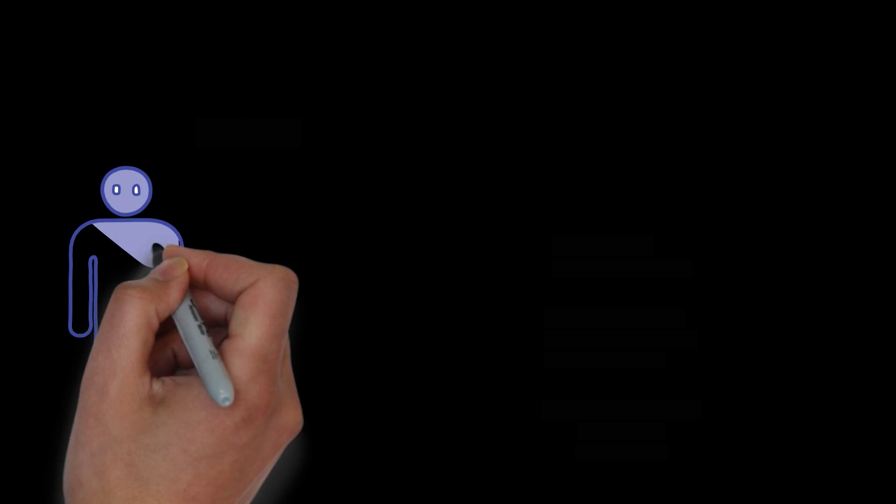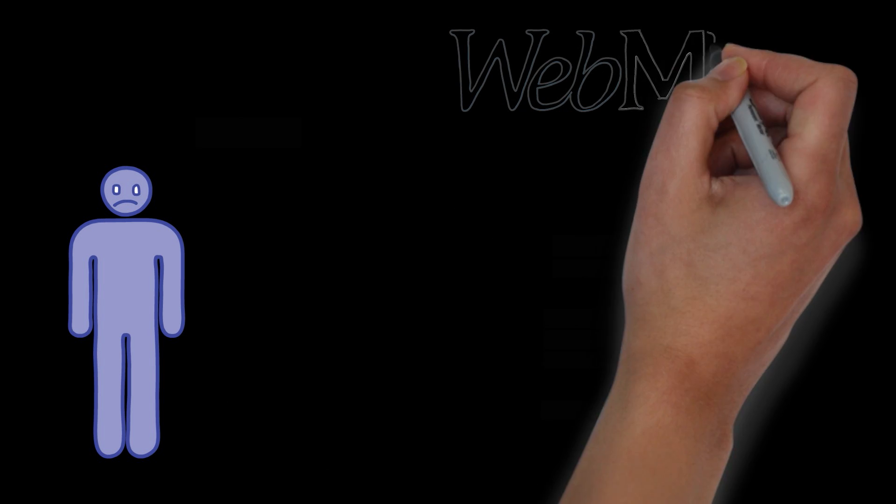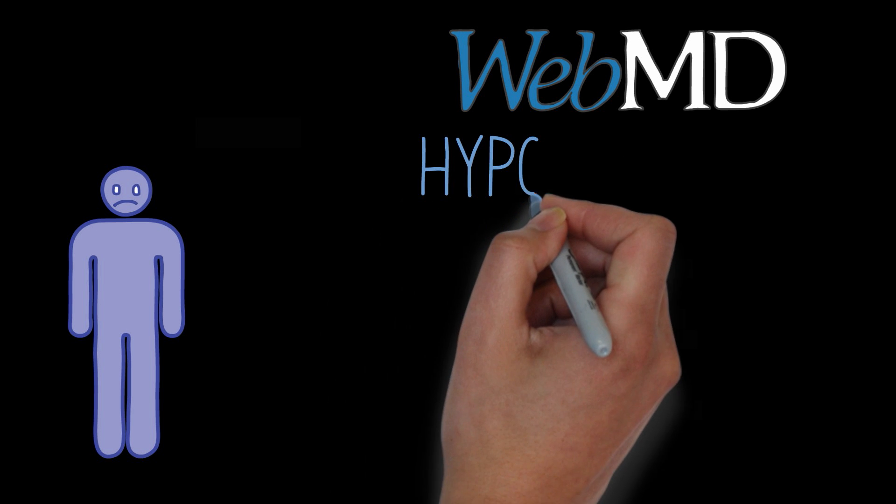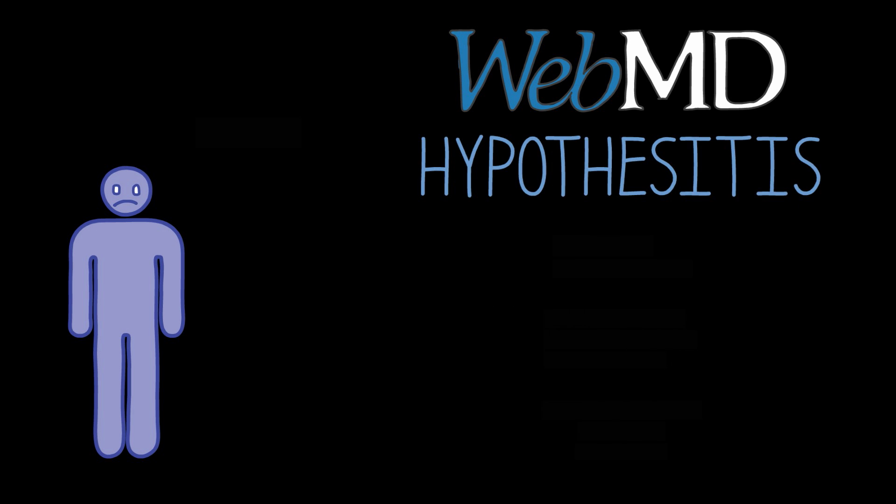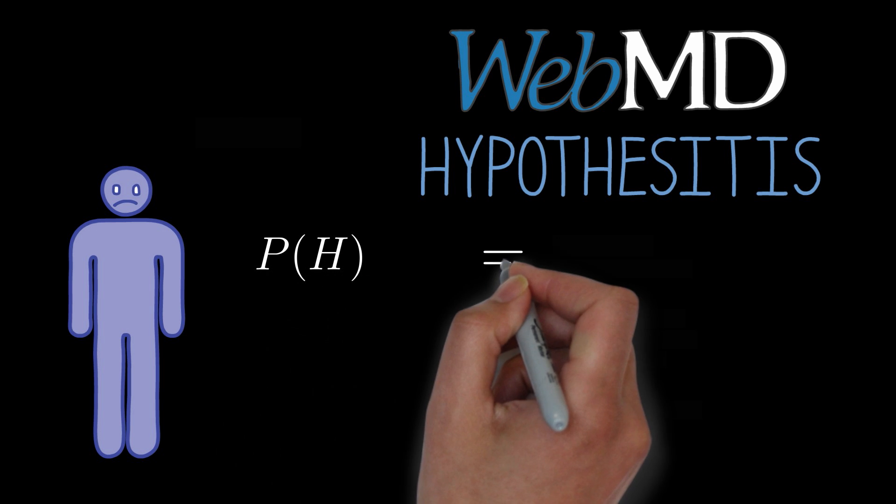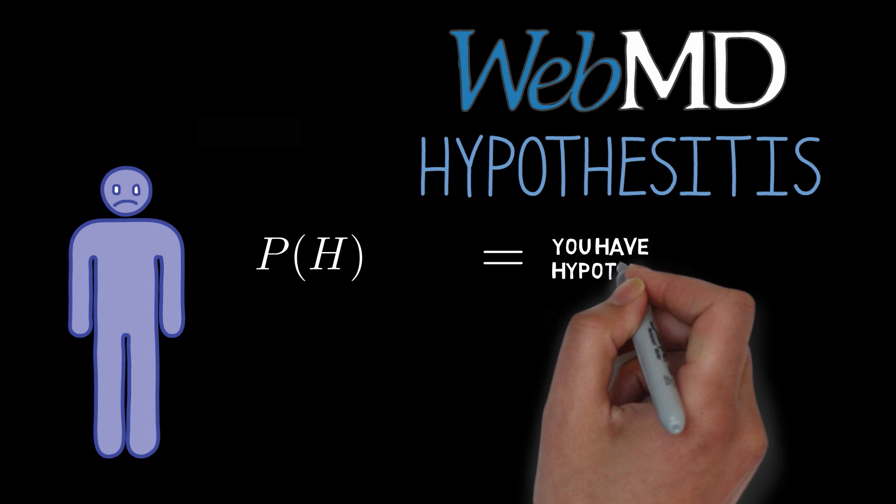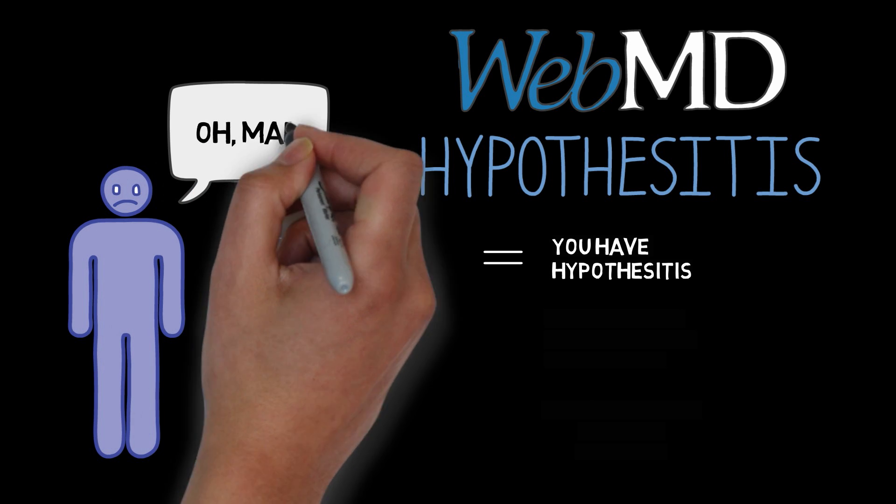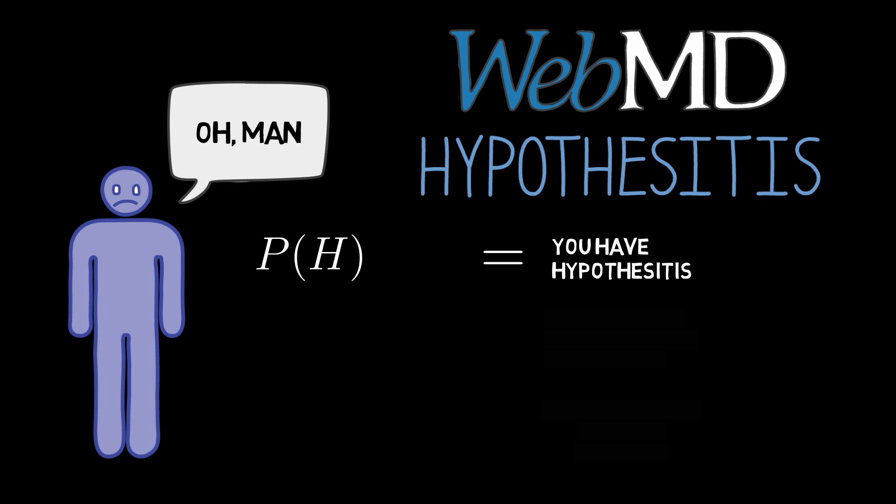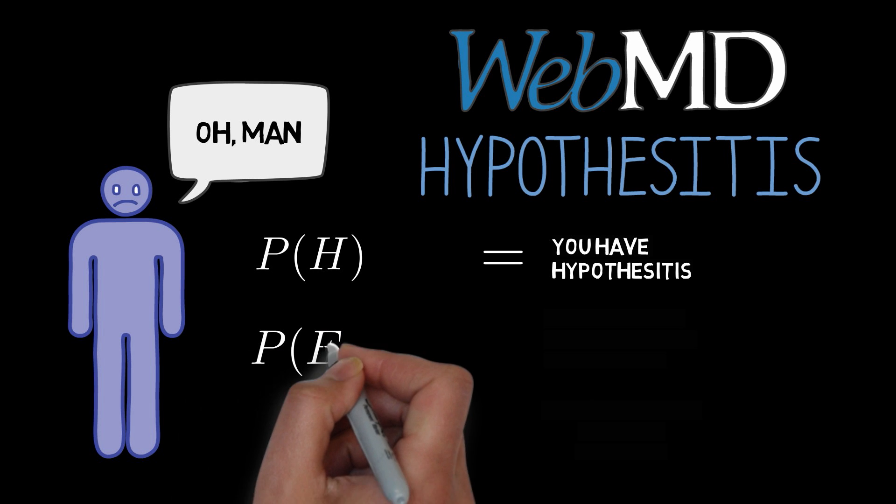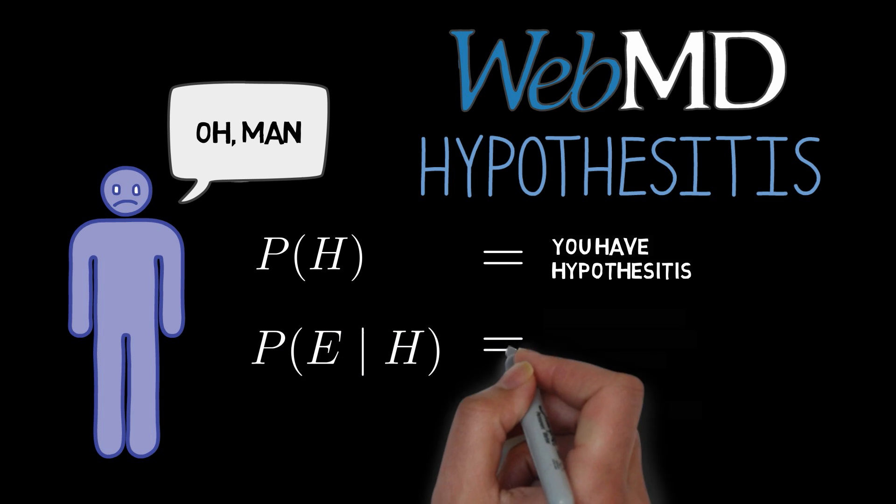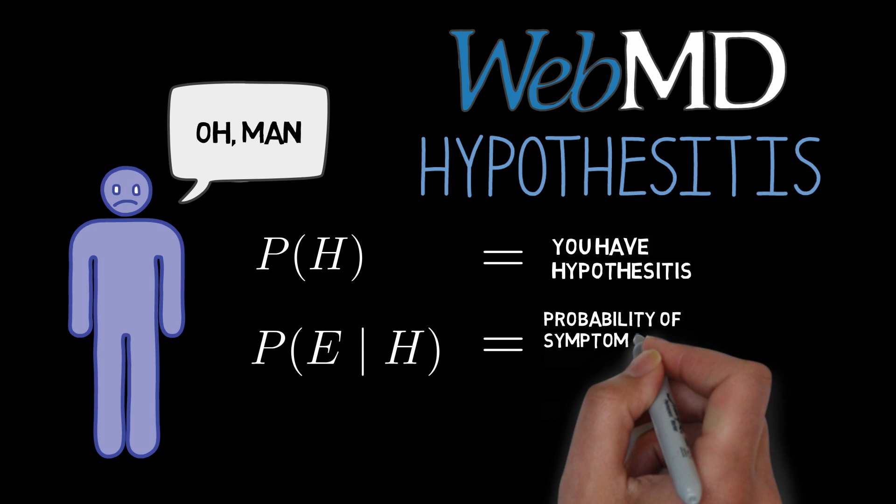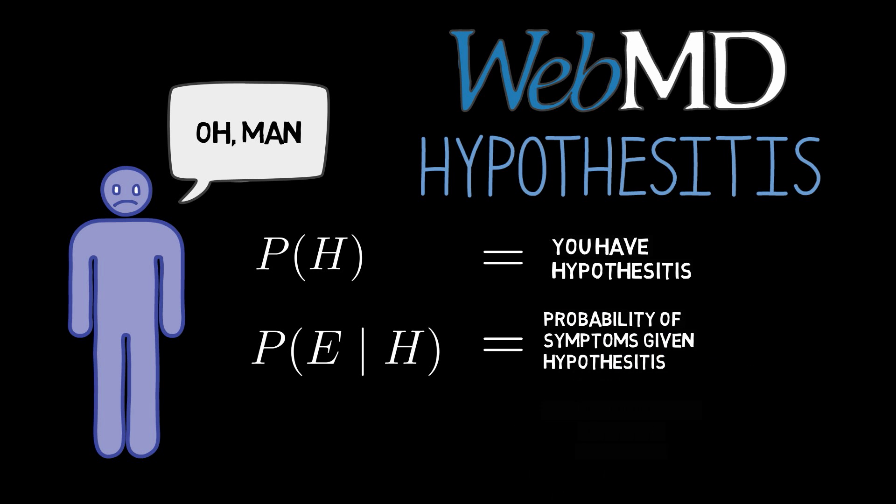Let's look at an example. Imagine that one morning you don't feel right and you go on WebMD to figure out what's wrong. You're browsing around until you find an illness that catches your eye, hypothesitis. So the hypothesis under consideration is that you've come down with hypothesitis. As you read through the list of symptoms, you realize that you have all of them. In other words, you have all of the symptoms that you would have if you had hypothesitis.